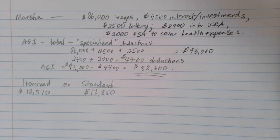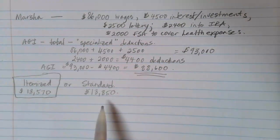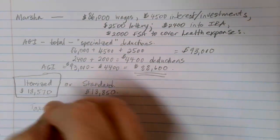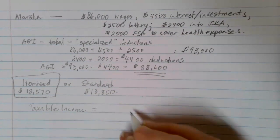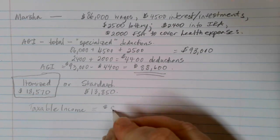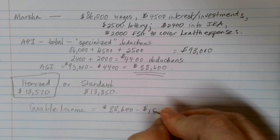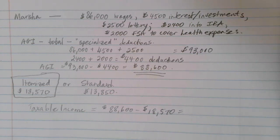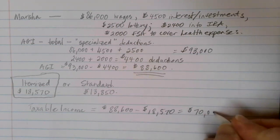Notice that Marsha's itemized deductions of $18,570 end up being more than the standard deduction of $13,850. So when we figure out Marsha's taxable income, we're going to take the adjusted gross income and choose to use the itemized deduction instead of the standard deduction, because it takes more money off. That gives us a taxable income of $70,030.